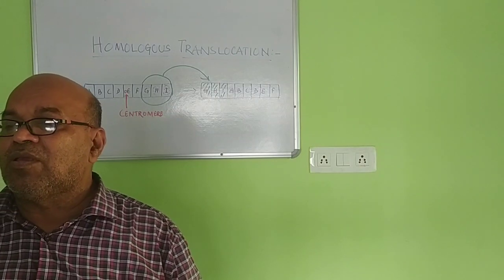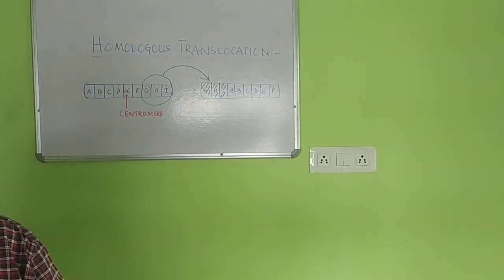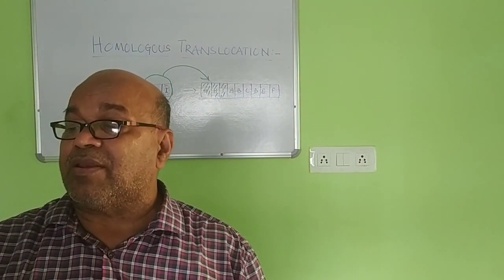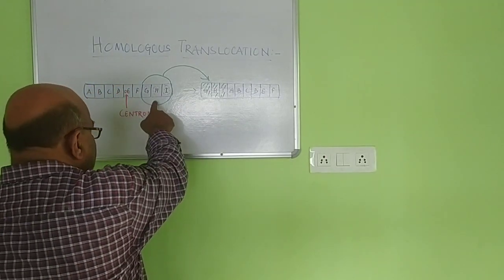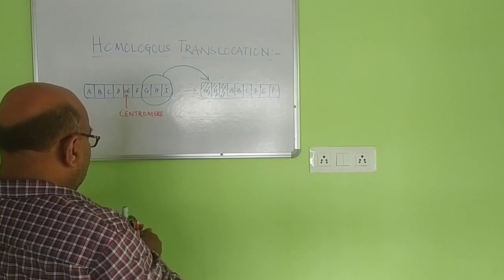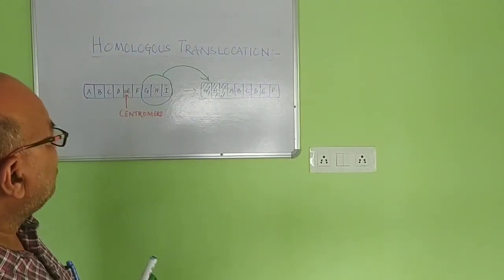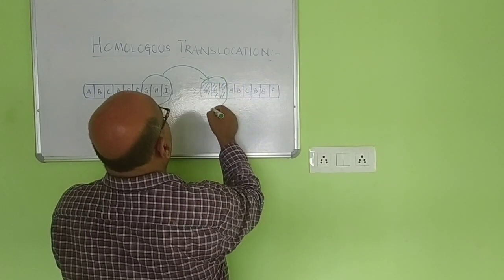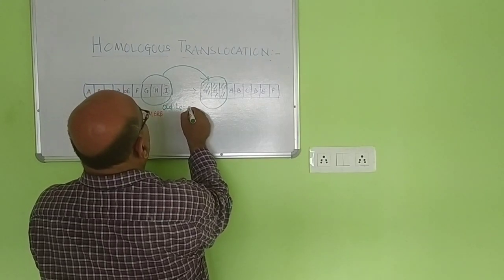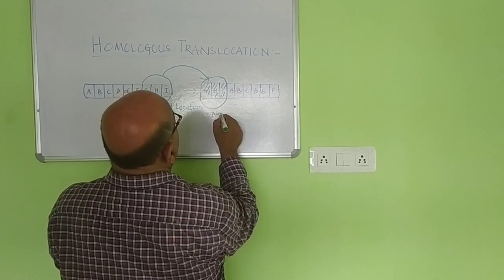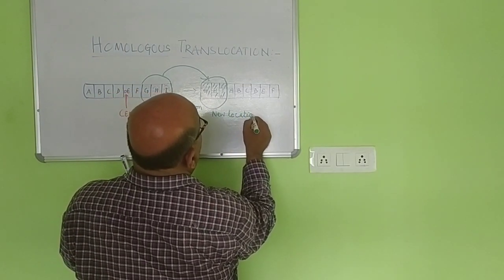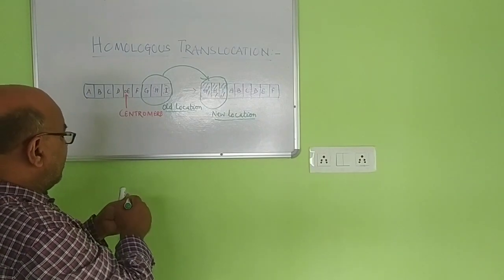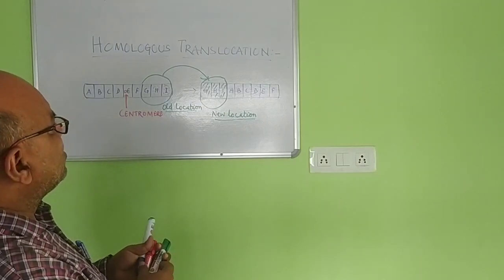This type of translocation is called homologous translocation. Homologous translocation is the shifting of a chromosome segment to a new location within the same chromosome. The original location changes to a new location. Due to the change of location, this is called homologous translocation.